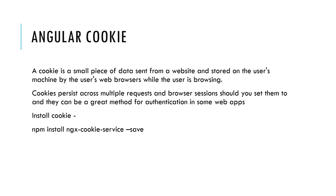What exactly is an Angular cookie? A cookie is a small piece of data sent from a website and stored on the user's machine by the user's web browser while the user is browsing. Cookies persist across multiple requests and browser sessions. When sent to the server, they can be a good method for authentication in some applications.